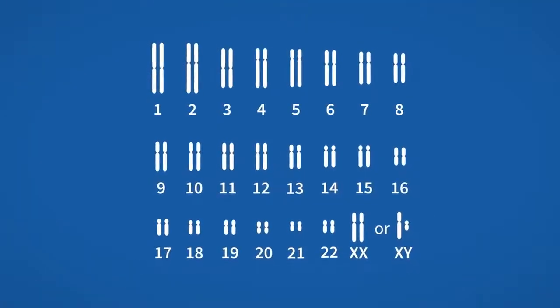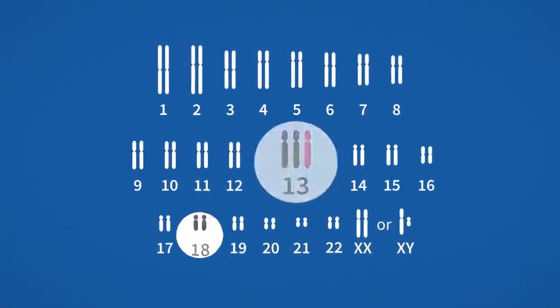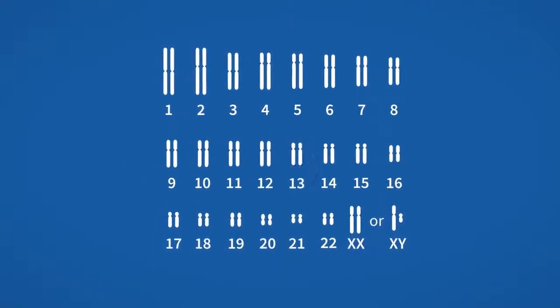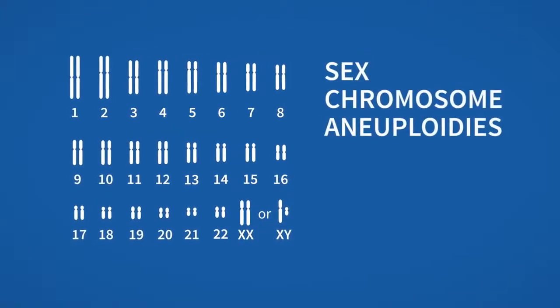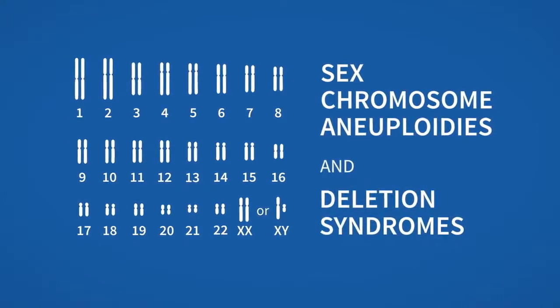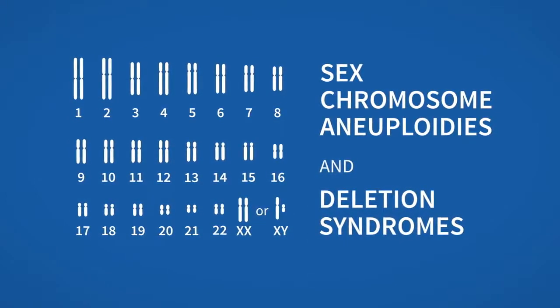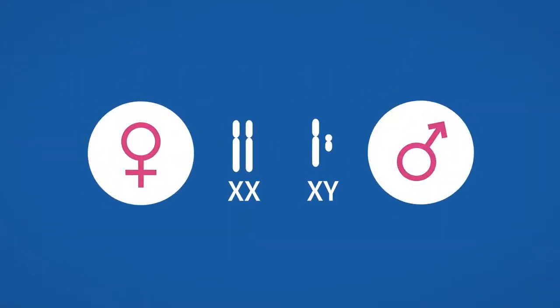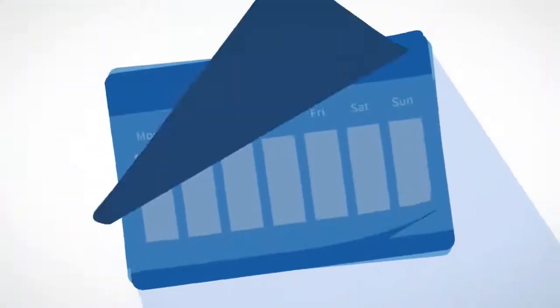The Nifty Test provides screening for trisomies 21, 18, and 13, plus further optional screening for a range of sex chromosomal aneuploidies and chromosomal deletion syndromes at no extra cost. The Nifty Test can also provide gender information, all from as early as week 10 of pregnancy.